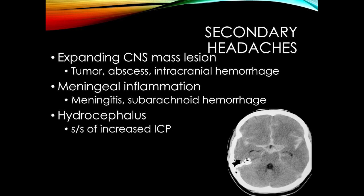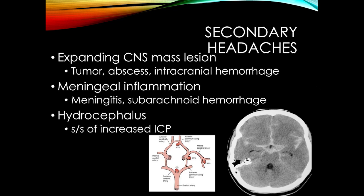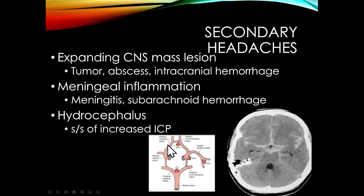Regarding subarachnoid hemorrhage, we look for diffuse subarachnoid blood. Aneurysms that rupture into the subarachnoid space are by and large on the anterior portion of the circle of Willis — at the anterior communicating artery, the trifurcation of the middle cerebral artery, and the junction of the internal carotid artery and the posterior communicating artery. Subarachnoid hemorrhage patients generally have a bad headache and neck stiffness but a pretty non-focal exam. However, an aneurysm along the posterior communicating artery — where the third nerve is — presenting with sudden onset headache and a third nerve palsy tells us it's a posterior communicating artery aneurysm that's ruptured.